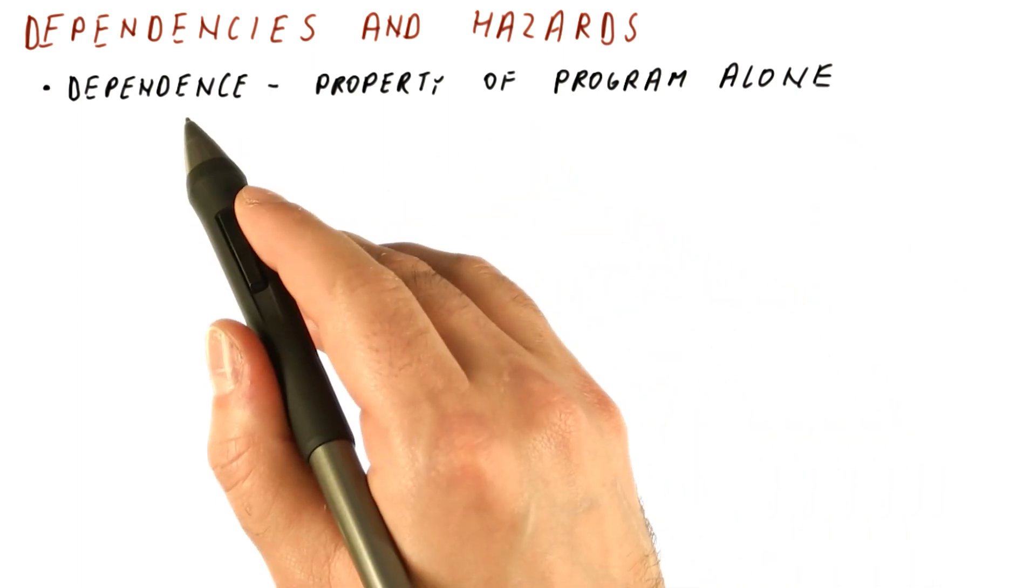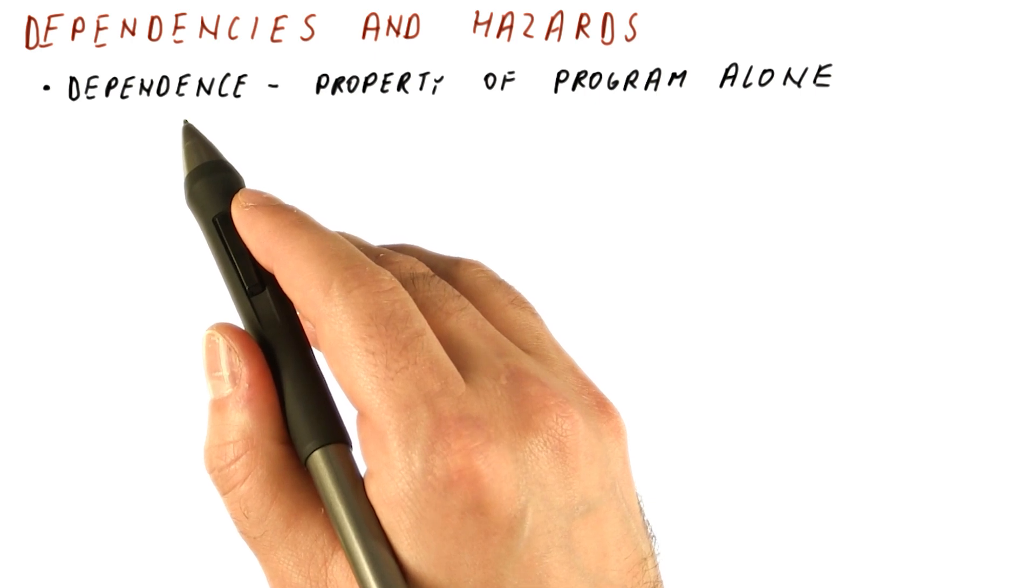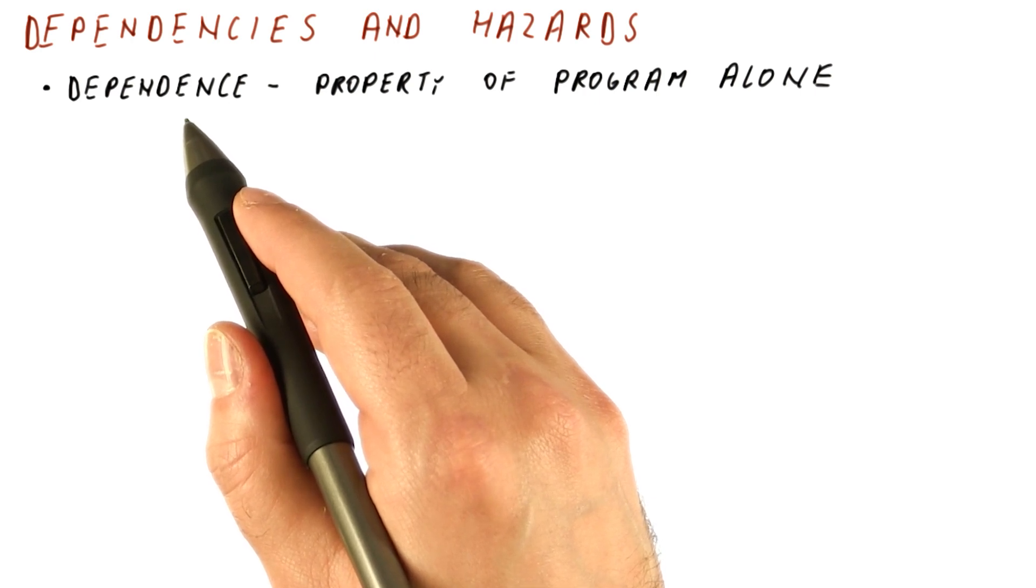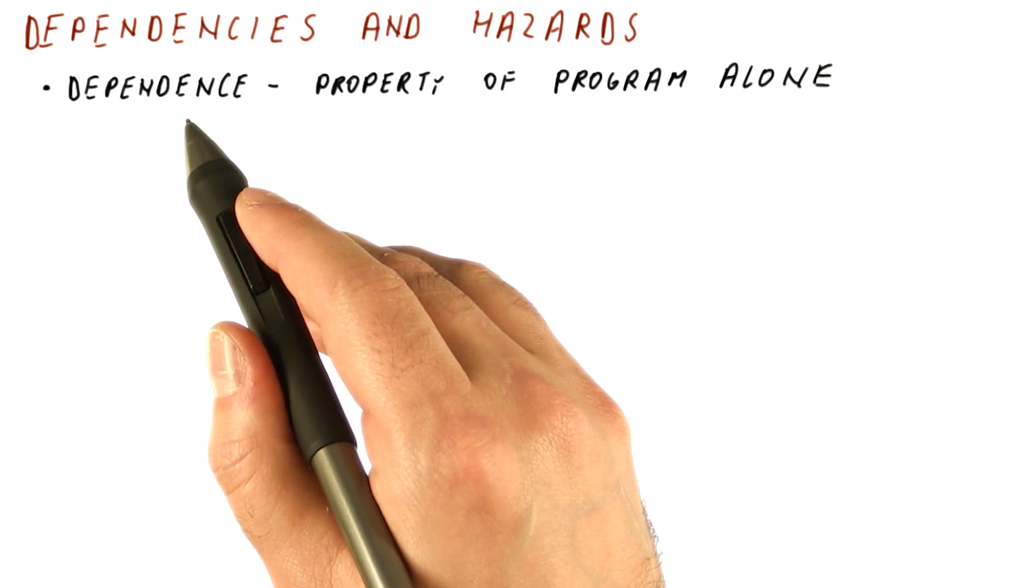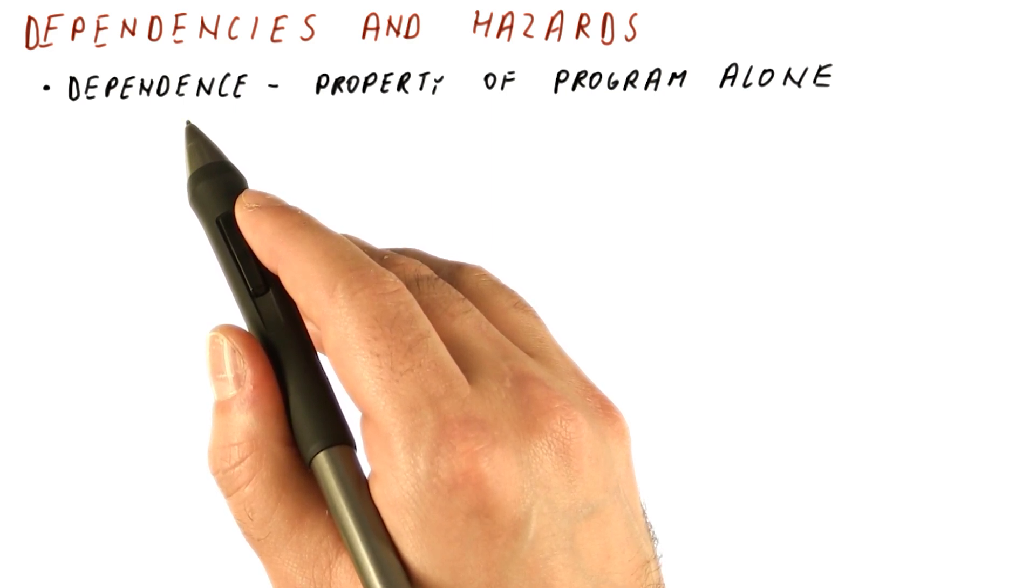In a particular pipeline, some dependencies will cause problems potentially, and some dependencies cannot cause problems no matter what. Let's look at an example of this.